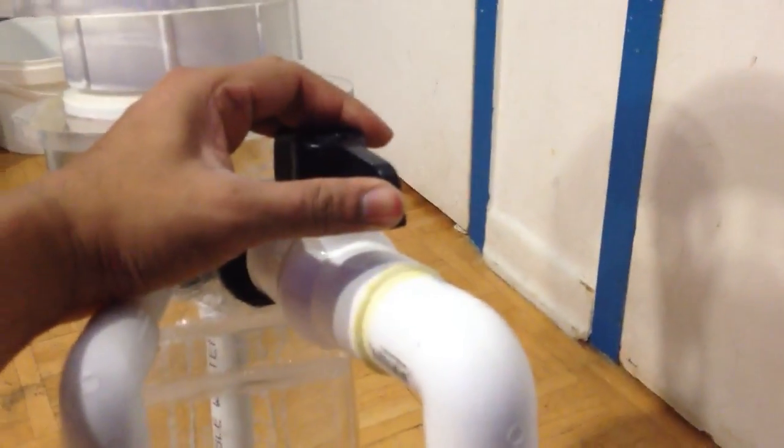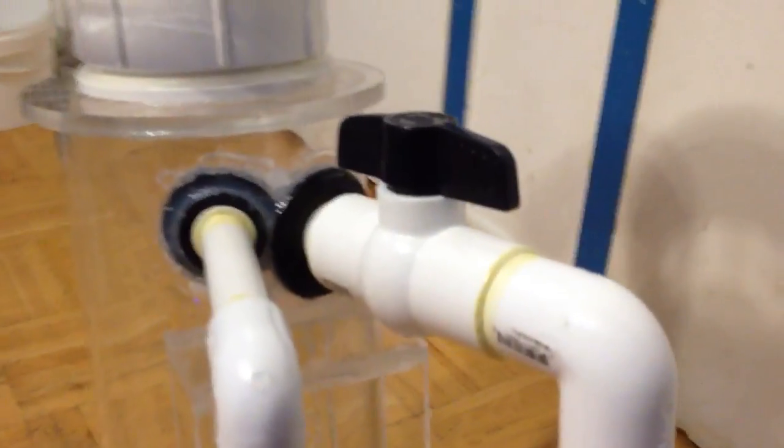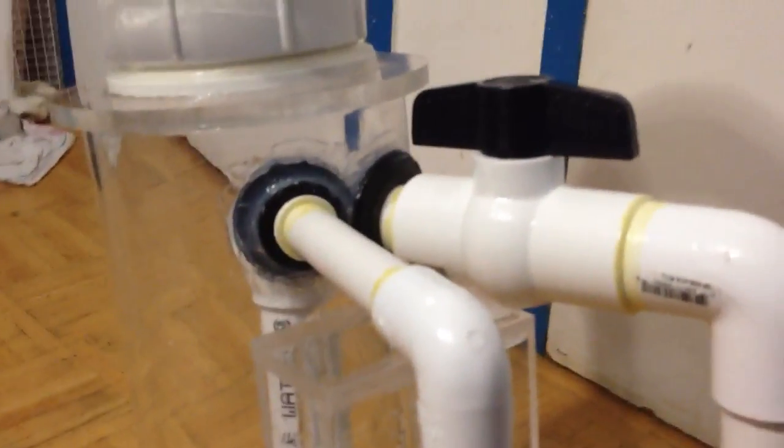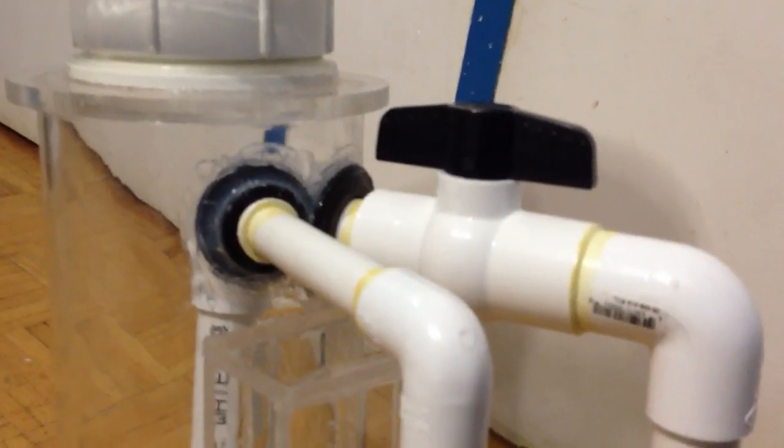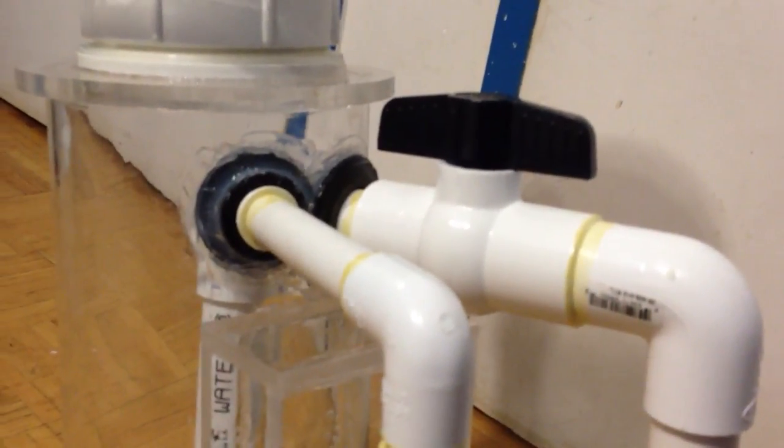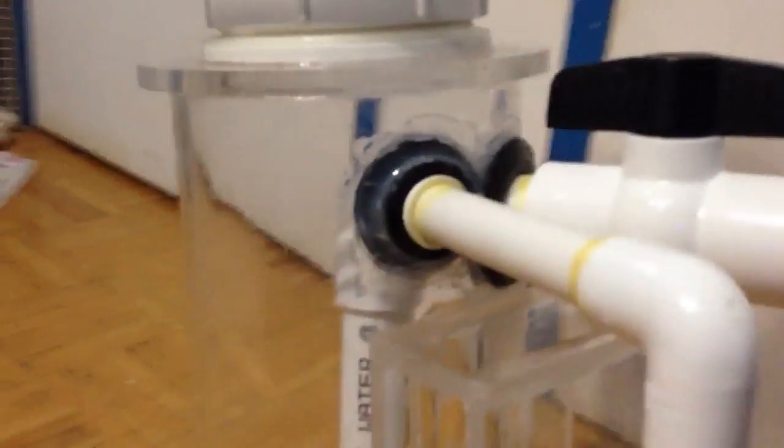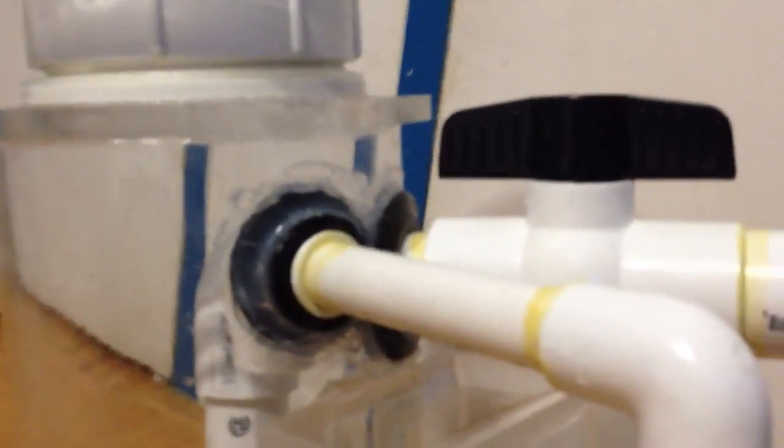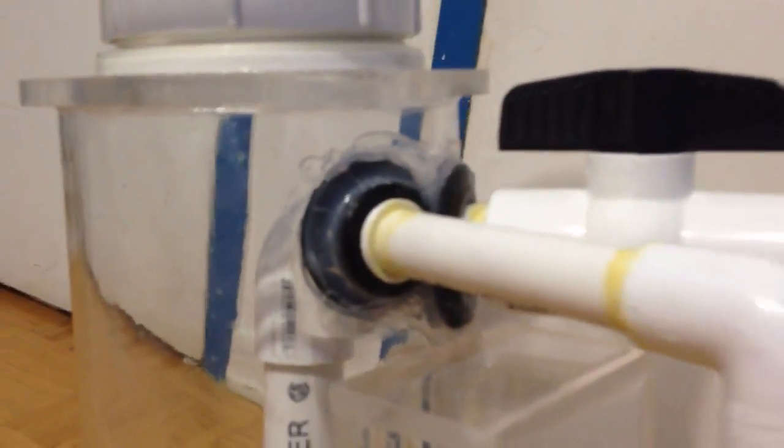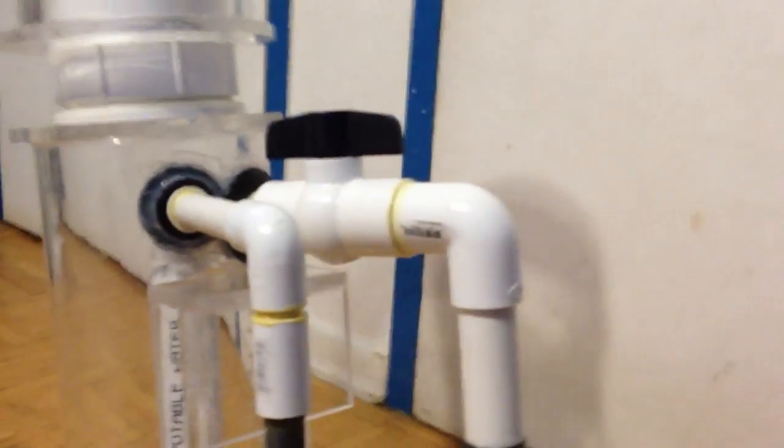Now the valve I got from Lowe's, pretty cheap, it wasn't too much money. I have a uniseal. Now with a uniseal, I always like to, some people just drill a hole and just stick it in, and it does create a complete seal. But you know what, better safe than sorry. I use aquarium silicone and silicone everything into place just to be safe.